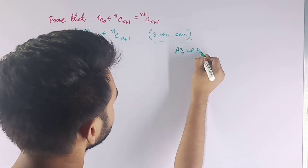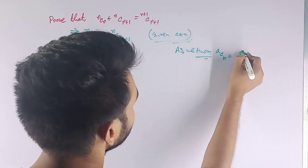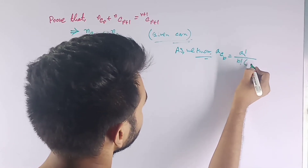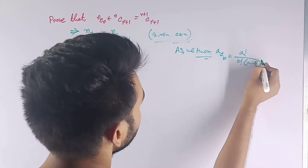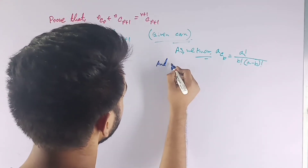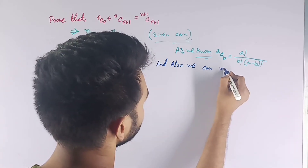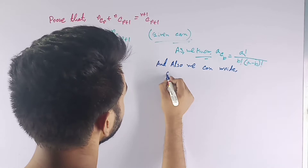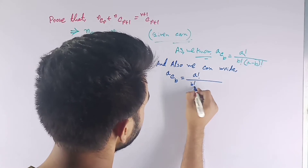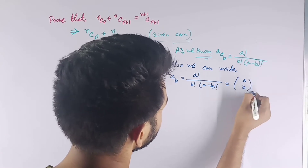Now we know that aCb = a! / (b! × (a−b)!). That's it. It's a very easy and very conceptual topic. So we can write nCr = n! / (r! × (n−r)!) and similarly for the next term.